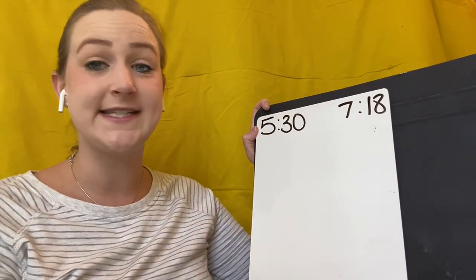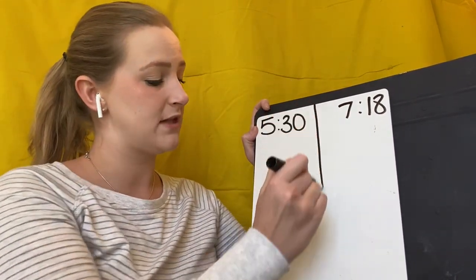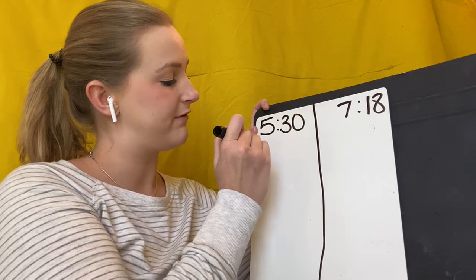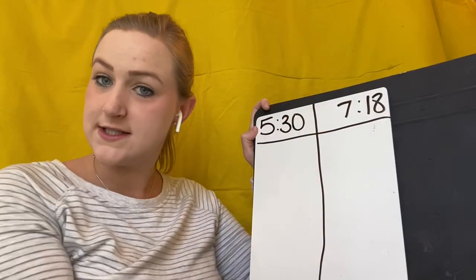So I'm going to use what's called a T chart. I'm going to draw a line down the middle and draw a line from left to right, where it kind of looks like a T. You guys see the T.